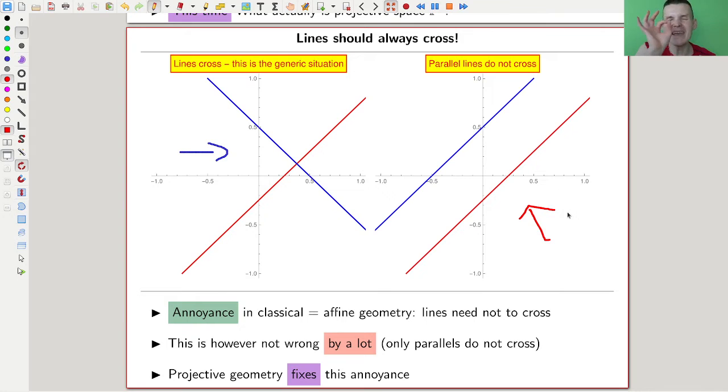But it's a little bit wrong, but not terribly wrong. It's not completely wrong. It's just one special case out of infinitely many, which actually work very well. So the idea is to kind of fix that by just adding a point at infinity where they meet. And that's what projective geometry does.